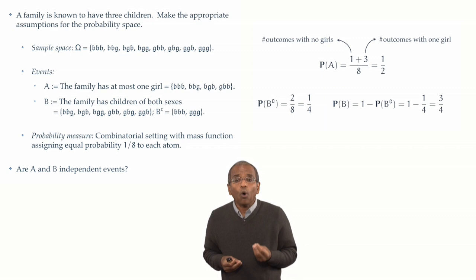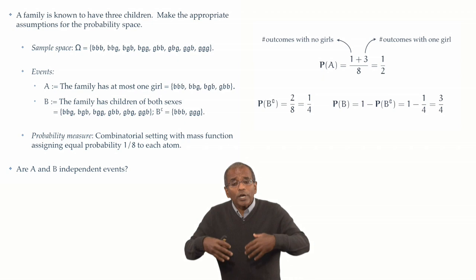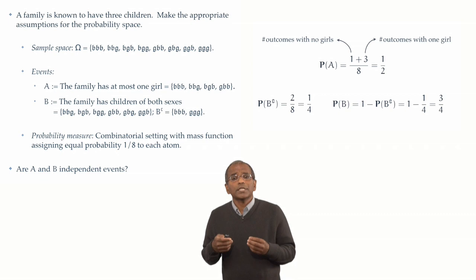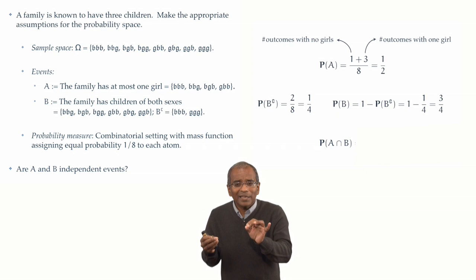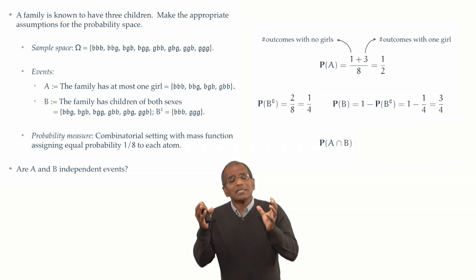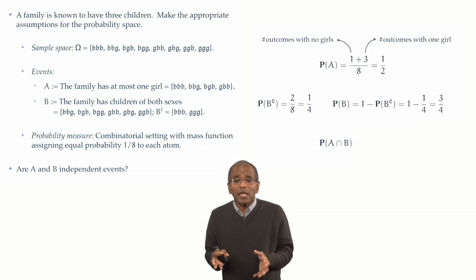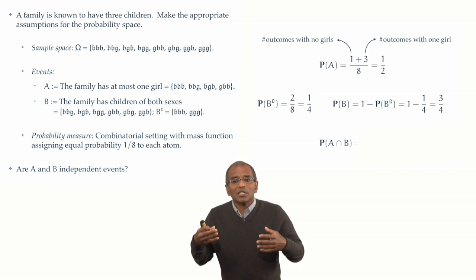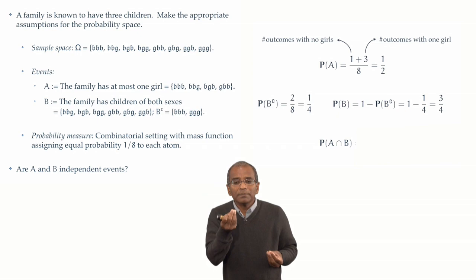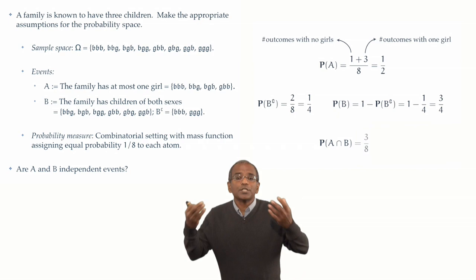Well, for independence, I'm going to need to check the joint probability of A and B. What can I say about the probability of the intersection of A with B? What does A intersection B mean? Well, it means that the family has at most one girl and that the family has children of both sexes. But this means that the family has precisely one girl. And that girl could be either the oldest, the middle or the youngest. The event A intersection B consists of the triple GBB, BGB, and BBG. It's got three possibilities. The probability of this event, therefore, is naturally 3 in 8.